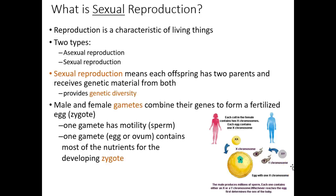Sexual reproduction — on the planet, there are two types of reproduction. There's asexual reproduction, where you'll have something like a fungus that will basically make a clone of itself, a bacteria which will basically make a clone of itself, algae, things like that.